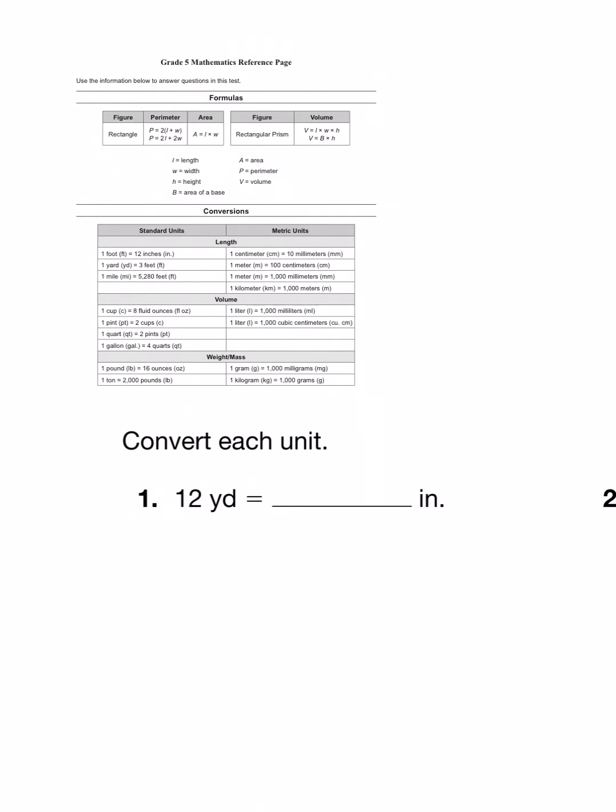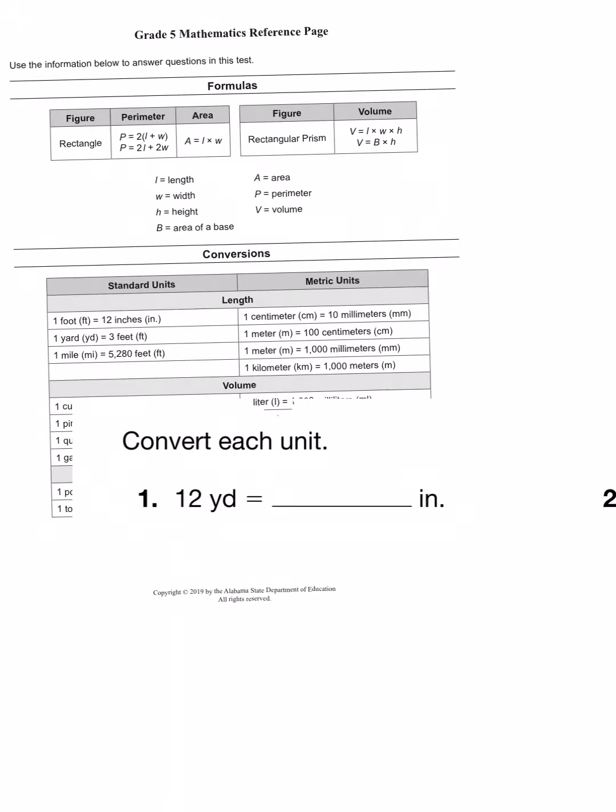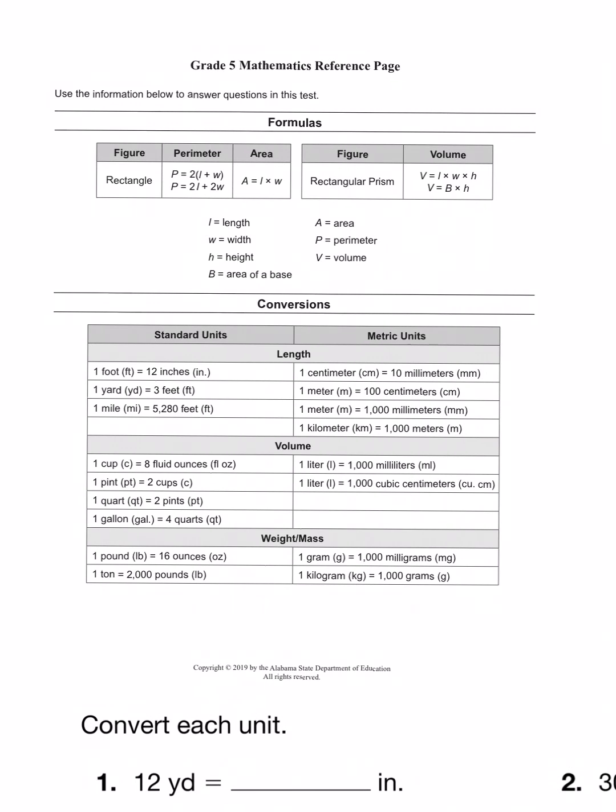So here is a copy of the grade 5 reference sheet. This is the reference sheet that you'll have on the ACAP test and notice that they have formulas for area and perimeter here. When they say formula that's the system that you use to calculate the perimeter or area or volume of something. Down here they have the conversions. When they say conversion they just mean changing from one unit of measurement to another. They have standard units on the left side, those are what envisions calls your customary units, and they have your metric units on the right side.